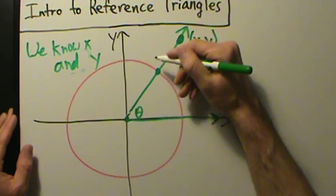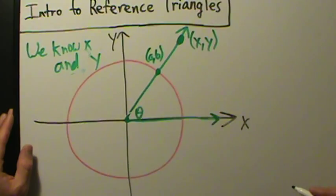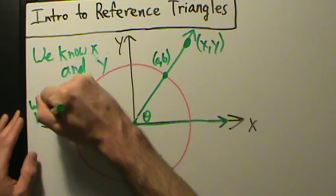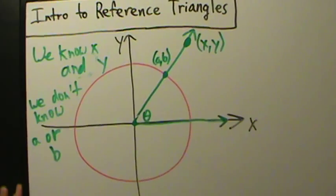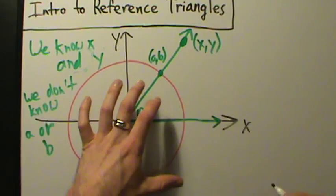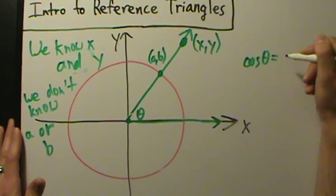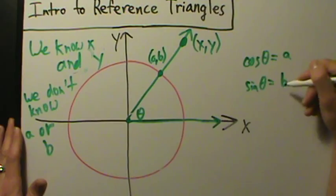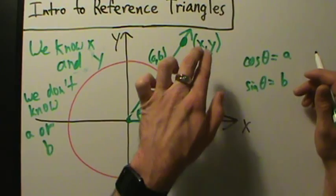The point where the terminal side intersects the unit circle, let's call that (A, B). We don't know A or B. Since (A, B) is on the unit circle, cosine of theta is the x-coordinate A, and sine of theta is the y-coordinate B. But we don't know A and we don't know B, so how can we express this in terms of x and y?